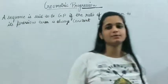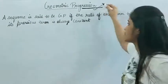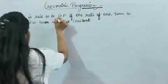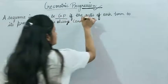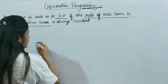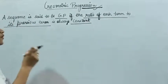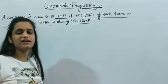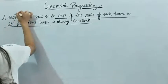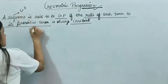Hello students, welcome to Miracle Maths Academy. Our today's topic is Geometric Progression. What is a GP? A sequence is said to be a GP if the ratio of each term to its previous term is always constant.